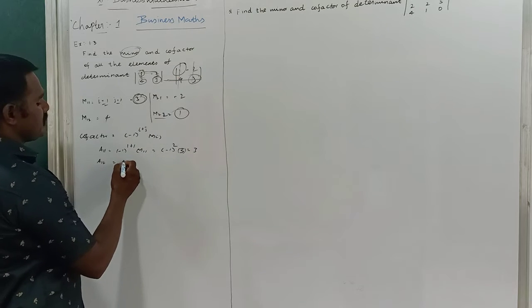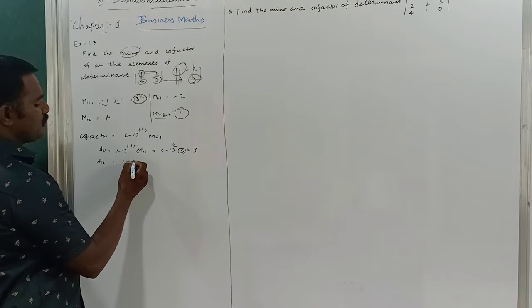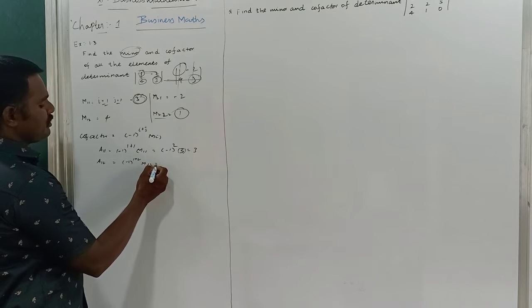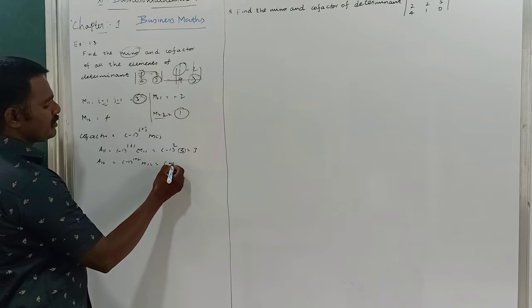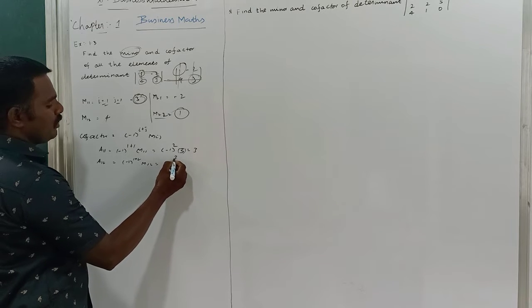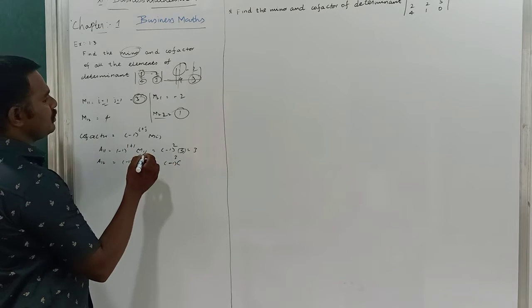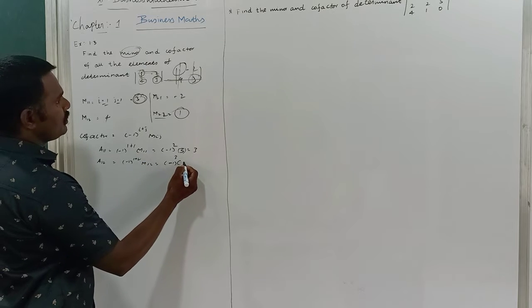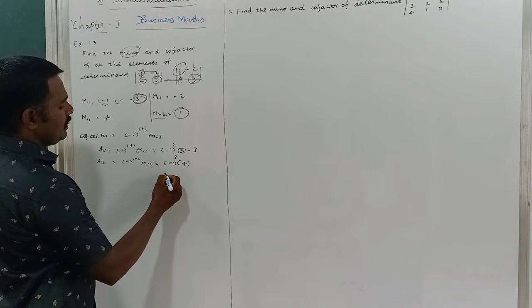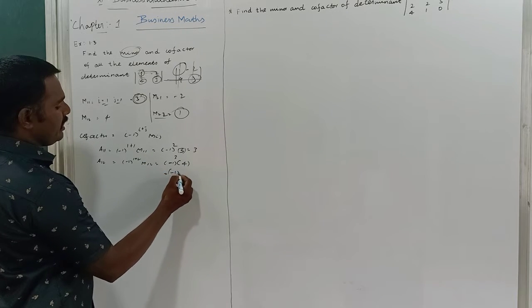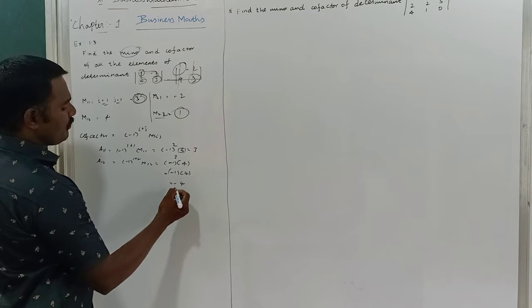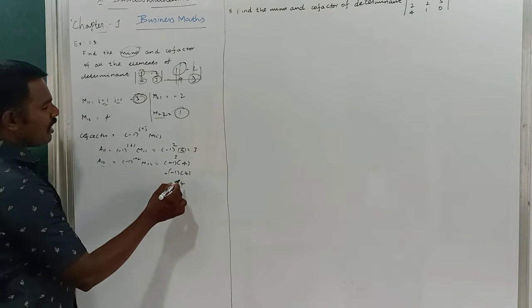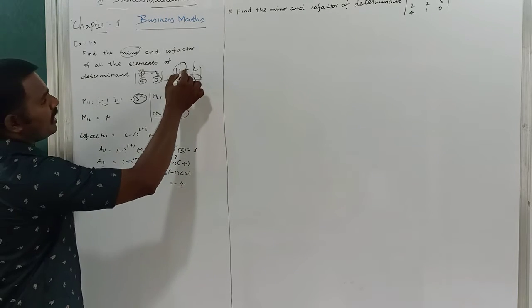Cofactor A12 = (-1)^(1+2) × M12 = (-1)^3 × 4 = -1 × 4 = -4. Therefore minus 4 is the cofactor of minus 2.